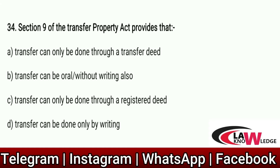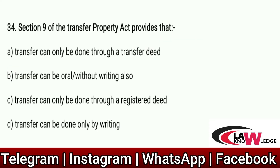Q34: Section 9 of the Transfer of Property Act provides that — Option A: Transfer can only be done through a transfer deed. Option B: Transfer can be oral or without writing. Option C: Transfer can only be done through a registered deed. Option D: Transfer can be done only by writing. Correct answer is B. Section 9 says that transfer can be oral and without writing.